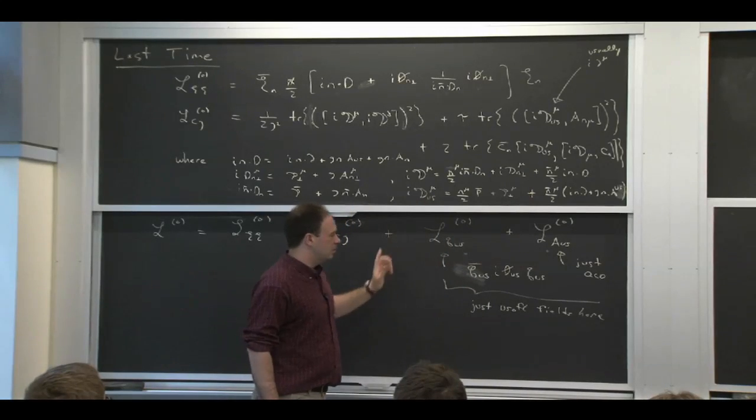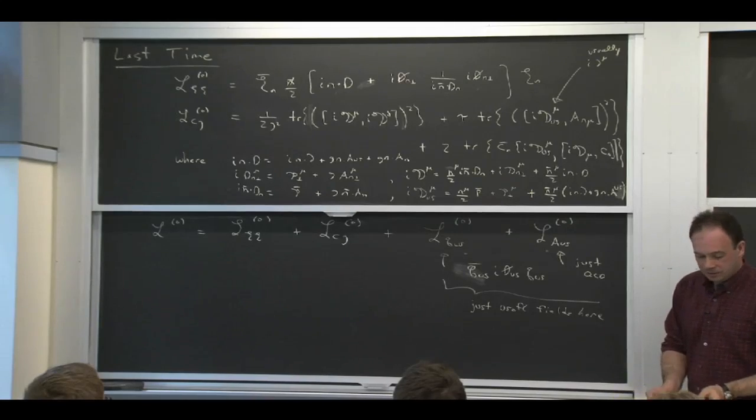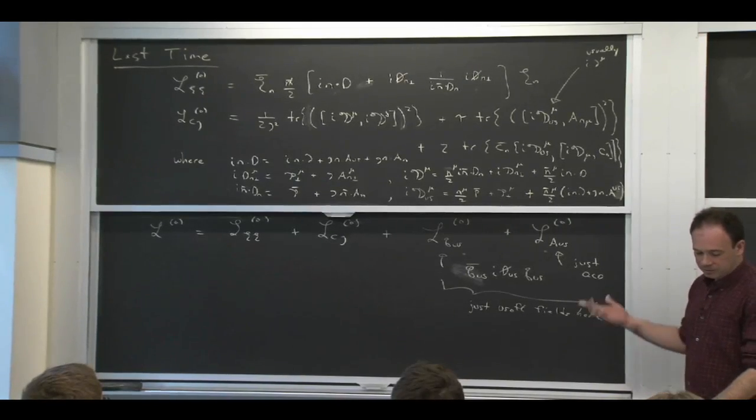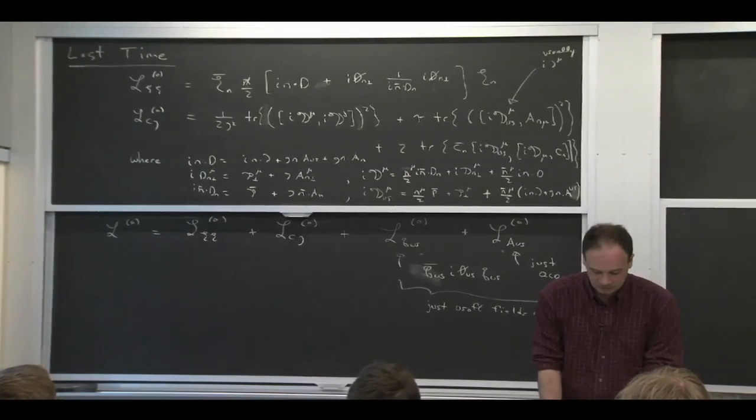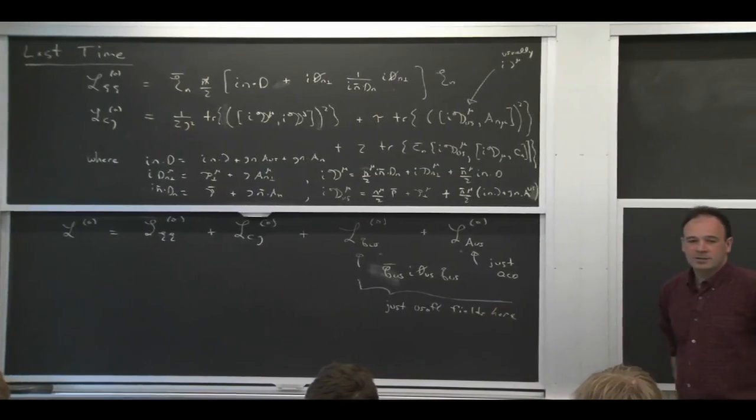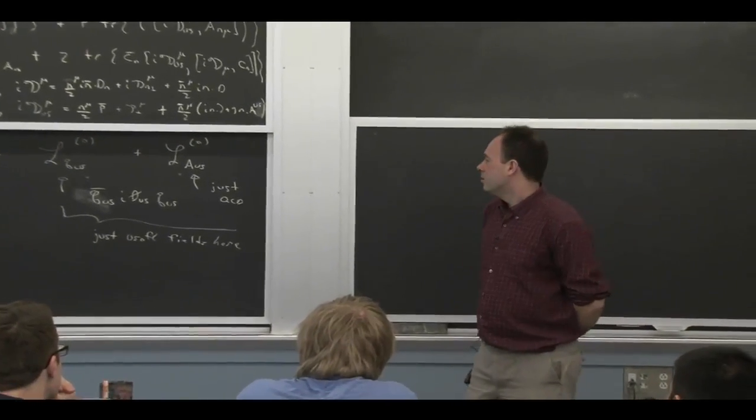And this piece here is simple. It's just QCD because it's the lowest energy mode. It doesn't know about any of the complications that we had for the collinear modes. So any questions about this so far?